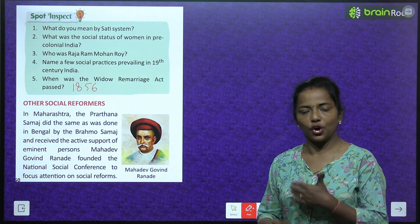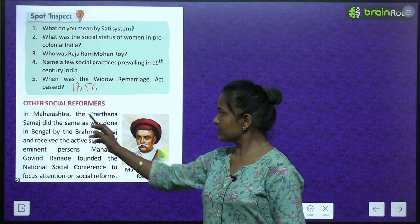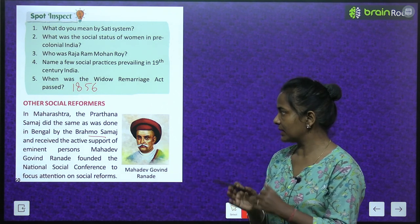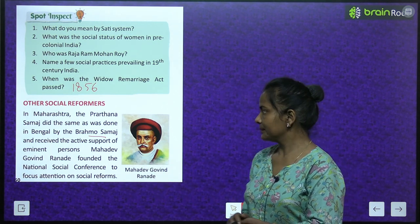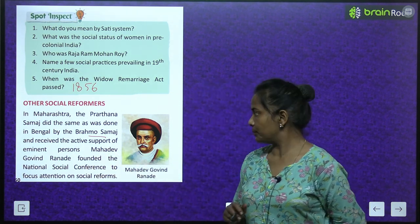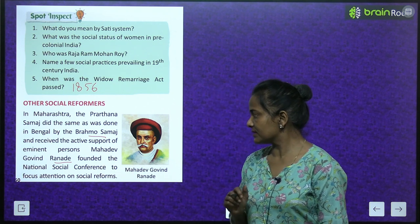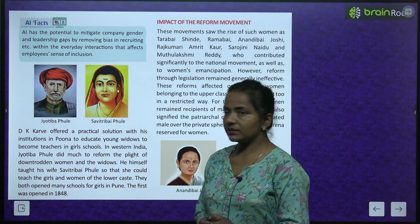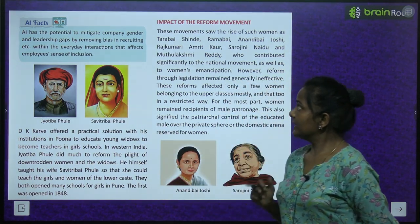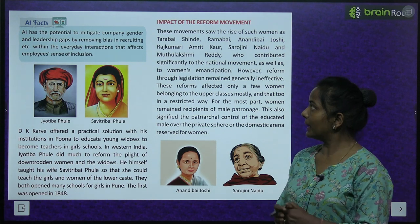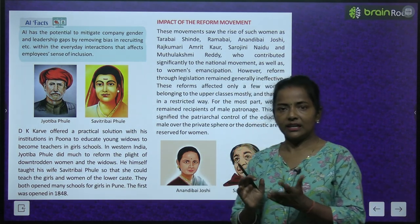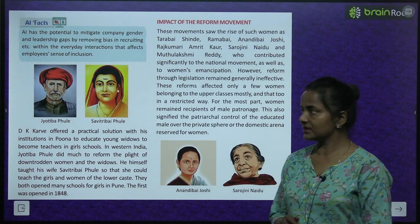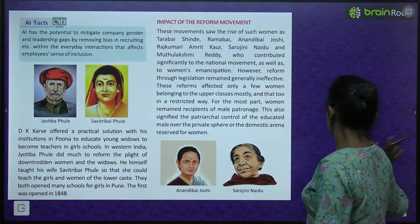Other social reformers: In Maharashtra, the Prarthna Samaj did the same work as was done in Bengal by the Brahmo Samaj, and received the active support of eminent persons. Mahadev Govind Ranade founded the National Social Conference to focus attention on social reforms. AI has the potential to mitigate gender and leadership gaps by removing bias in recruiting and everyday interactions that affect employees' sense of inclusion.